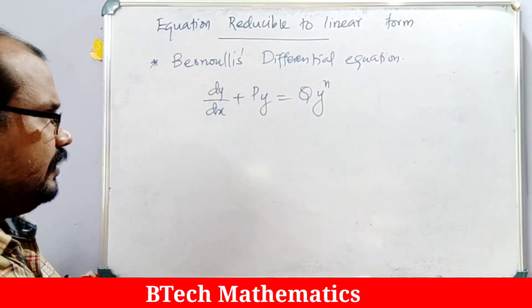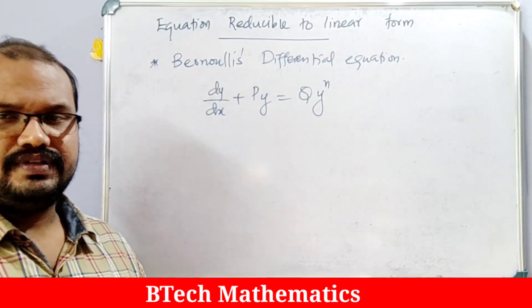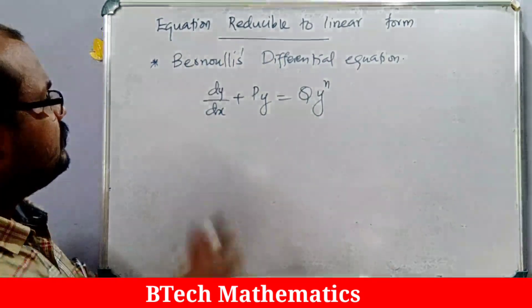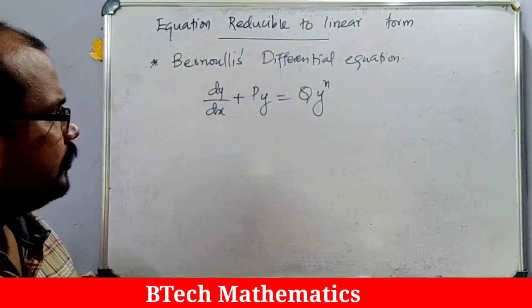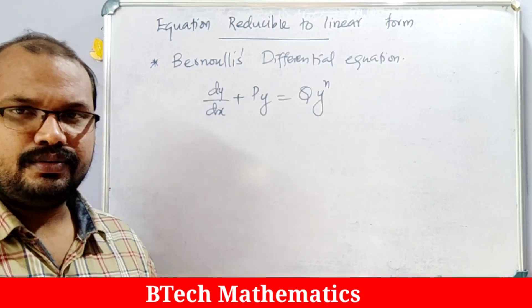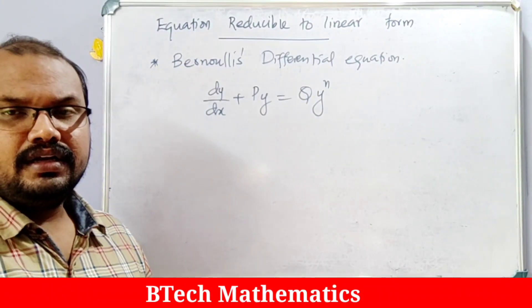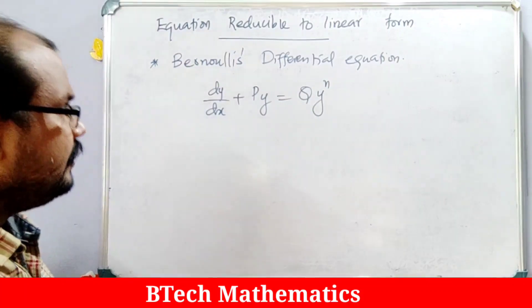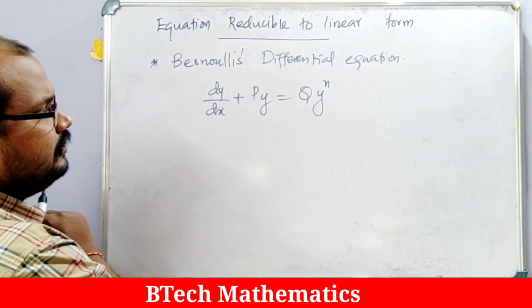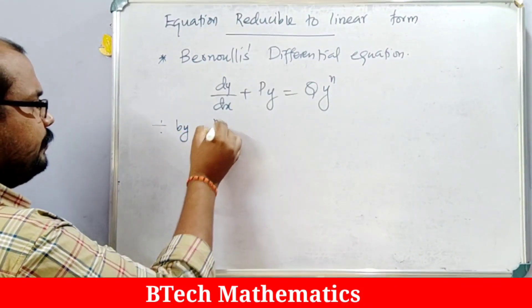We can reduce this equation into a linear differential equation — a first order, first degree linear differential equation. This type of equation dy/dx + Py = Qy^n is called Bernoulli's differential equation. We can reduce it to linear form by dividing by y^n throughout the equation.